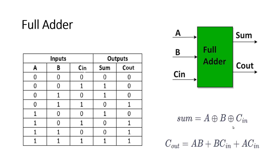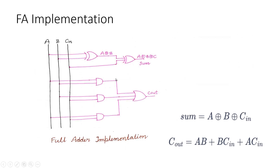Now, how will you implement it with logic gates? Very easily, anyone can design it like this. For the Sum equation: first an XOR gate for A XOR B, then another XOR gate adding C, giving Sum = A XOR B XOR C. For C_out: one AND gate for AB, another for BC, a third for CA, and finally one OR gate combining all three outputs to get C_out.